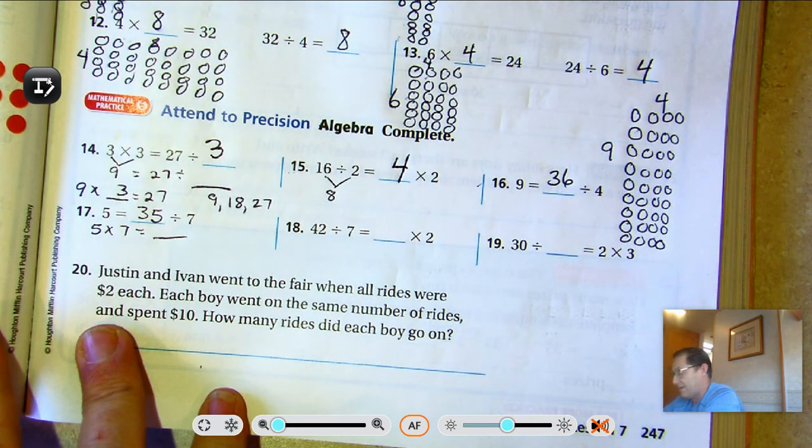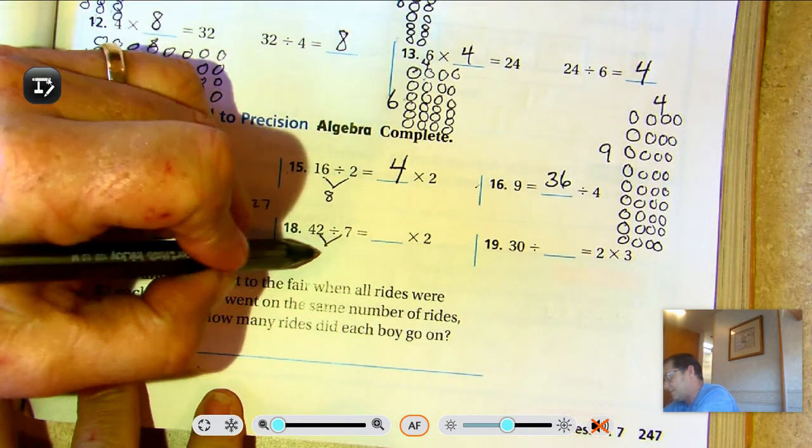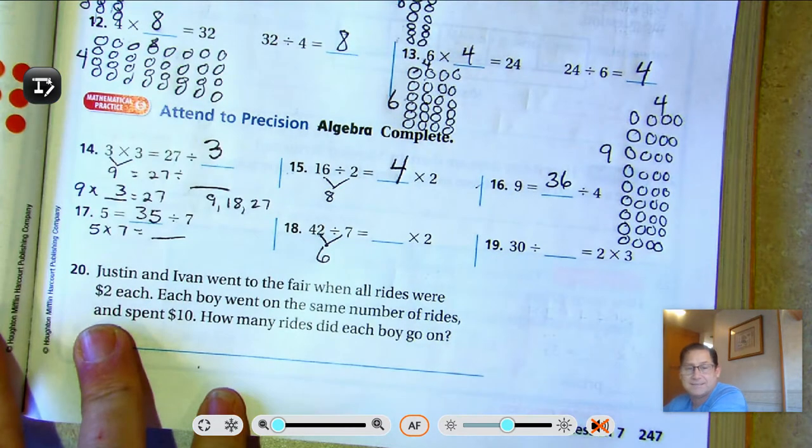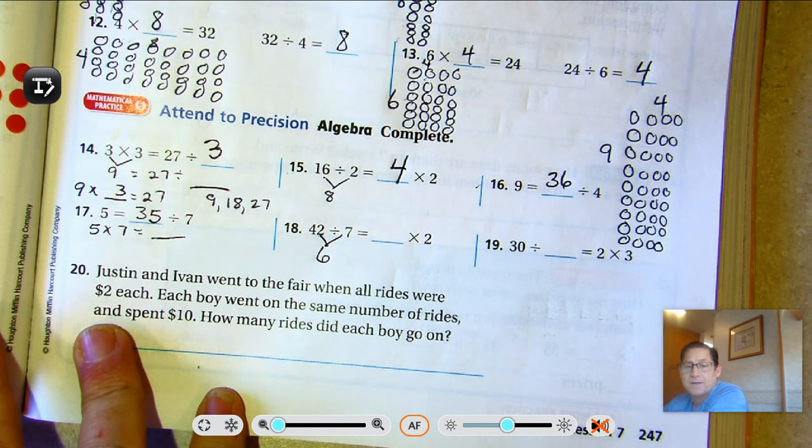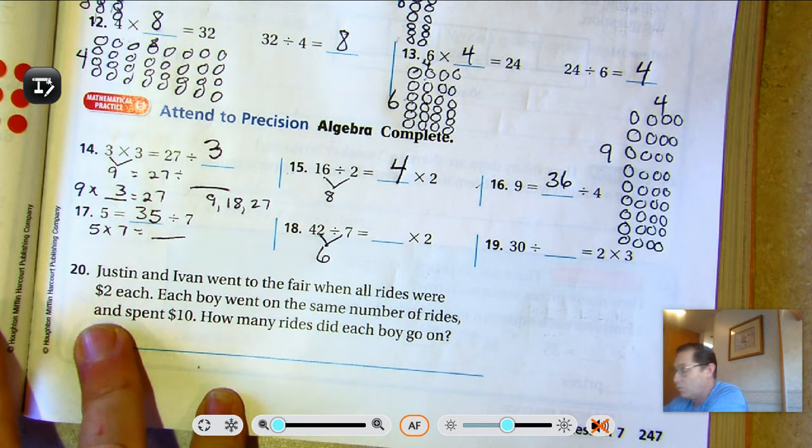42 divided by 7 is 6 because 6 times 7 is 42. So what number times 2 is 6? 2, 4, 6, three.